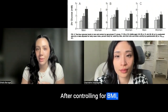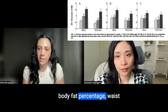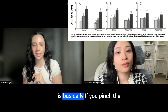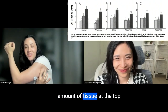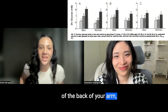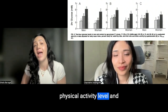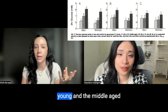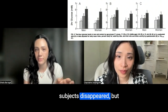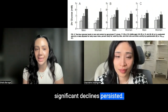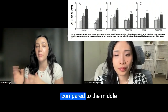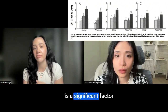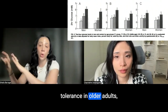After controlling for BMI, body fat percentage, waist to hip ratio, subscapular triceps skin fold ratio — which is basically the amount of tissue if you pinch the top of the back of your arm — physical activity level and fitness level, age-related differences in glucose tolerance between the young and the middle-aged subjects disappeared, but significant declines persisted in older individuals compared to the middle-aged or young subjects.